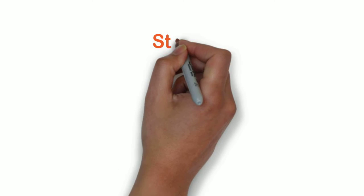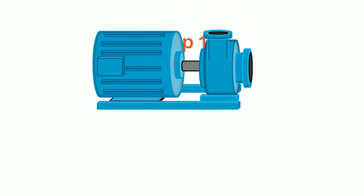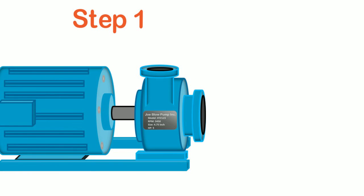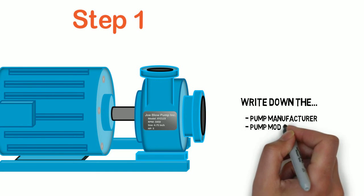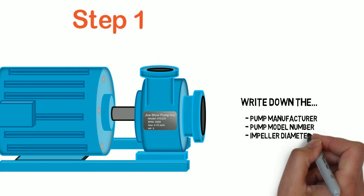Let's get started. Step one, we're going to go to the pump we're working on and we're going to record the data off the information plate. Manufacturer, model number, RPM, the impeller size, and the horsepower.